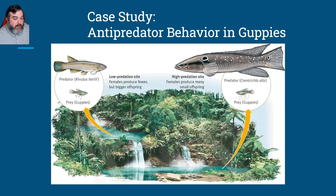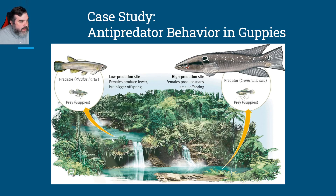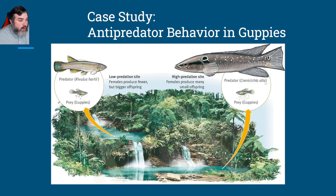This image helps show what's going on. We have the low predation site upstream and then down the waterfall to the high predation site. The guppies are prey in both situations. Upstream, we have the Rivulus hartii as the predator there, whereas downstream we have the Crenicichla alta — the guppies' main predators at each site.